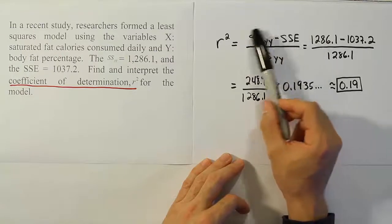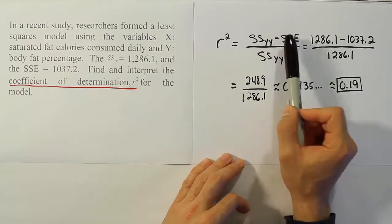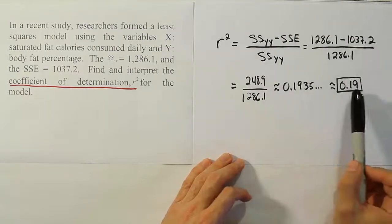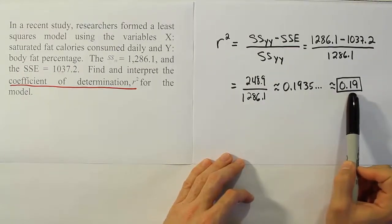So, this whole top part describes the variation in Y that's due to X divided by the total variation in Y. So, this gives us the proportion of variation that's present in Y that can be explained by X.